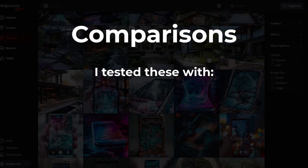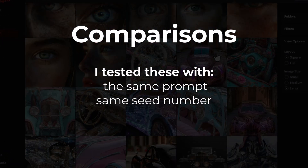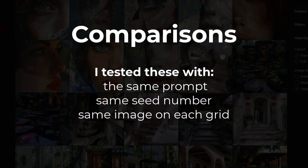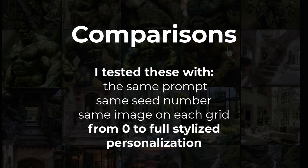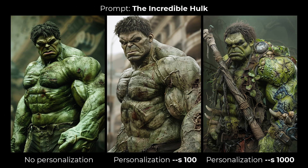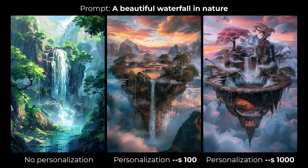I've tested these out using the exact same seed number and the exact same image on each grid to more accurately show the difference from non-personalized to standard personalized to full stylize 1000. Starting with the Incredible Hulk, he looks fairly normal in the first image with no personalization, a little more roughed up in the middle, and then almost completely caveman on the far right with stylize 1000. Moving to a beautiful waterfall in nature, we get a pretty standard image on the left, something more artistic in the middle, and with stylize 1000 a whole different color palette with pink leaves — a much more interesting image, at least in my opinion, since I chose the images I like.